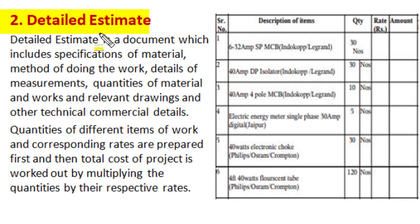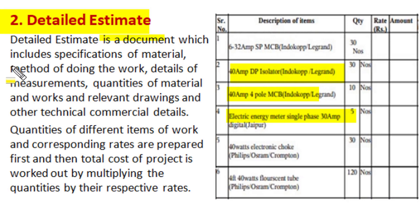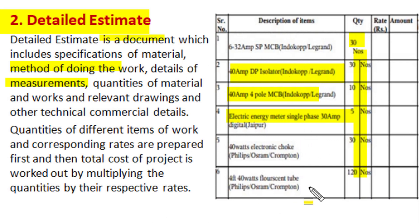Detailed estimate is a document of considerable detail and it includes specifications of all material involved in project installation. It also includes detailed specifications and work schedule for the method of doing the work, all relevant measurements to find out quantities of all sorts of materials and work to be performed in electrical installation, along with all relevant drawings and other details with all necessary technical specifications and commercial details.